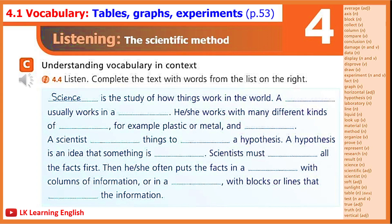4.4. Exercise C. Listen. Complete the text with words from the list on the right. Science is the study of how things work in the world. A scientist usually works in a laboratory. He or she works with many different kinds of materials, for example, plastic or metal and liquids. A scientist tests things to prove a hypothesis. A hypothesis is an idea that something is true. Scientists must collect all the facts first. Then he or she often puts the facts in a table with columns of information, or in a graph, with blocks or lines that represent the information.